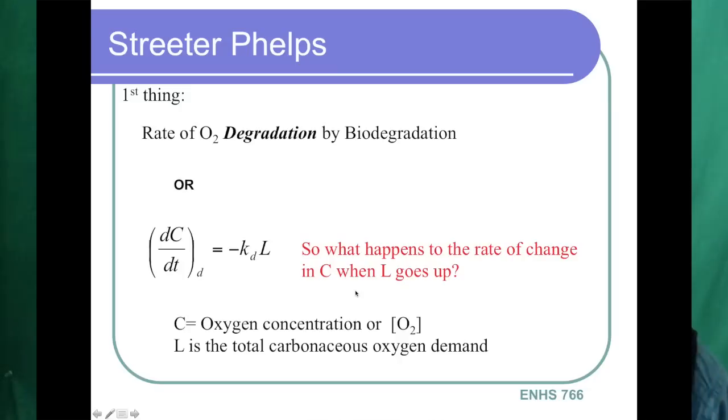So the rate of oxygen degradation is this term: basically negative KD times L, where KD is your decay coefficient. L is your total carbonaceous BOD, your oxygen demand. In this case, we'll just use what I'll use in the model is UOD. We'll just say that's our total oxygen demand. So what happens to the rate of change in C when L goes up? Well, if L goes up, the rate of change of C will then also go up. So the more BOD you have in your water column represented by that L, the more you will see a negative change, because this is a negative sign.